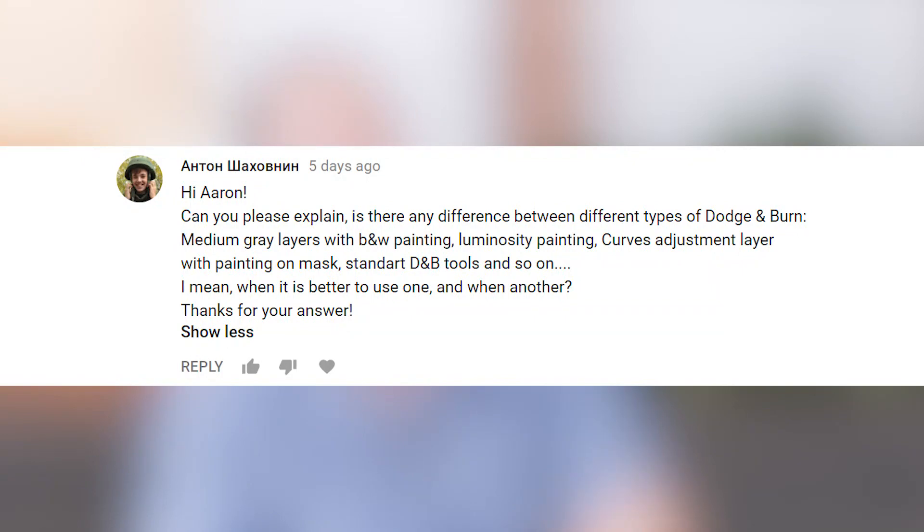Can you explain — is there any difference between different types of dodging and burning? Medium gray layers, black and white painting, luminosity painting, curves adjustment layers, painting on a mask, standard dodge and burn, and so on. Basically you're making part of your image lighter and part darker, usually to enhance detail in a photograph. There are a lot of different ways to do this and no single right way, but there are some things to stay away from. The most important thing is to work non-destructively — meaning you're not editing the actual pixels in your photo. This is why I recommend staying away from the dodge tool and the burn tool in Photoshop, because these will actually destroy pixels.